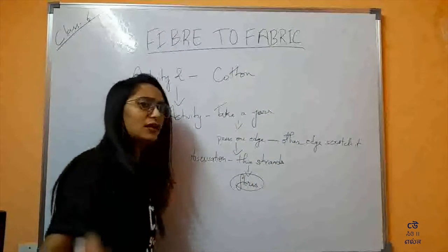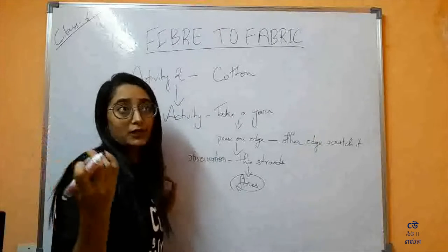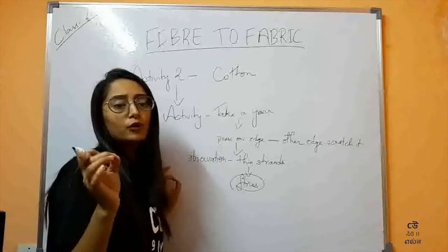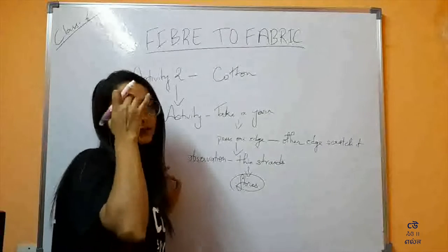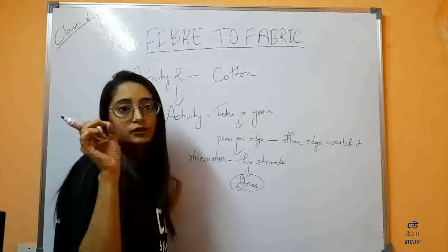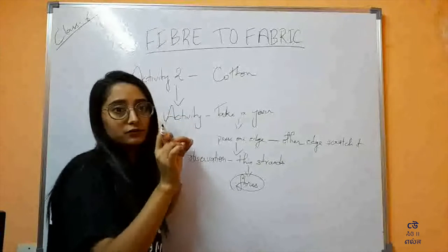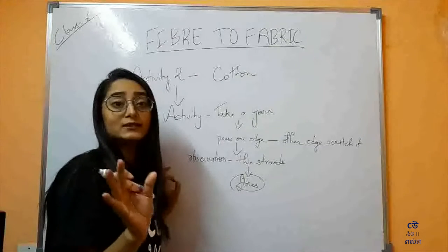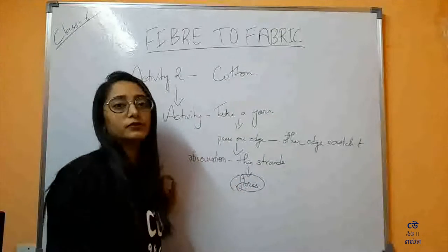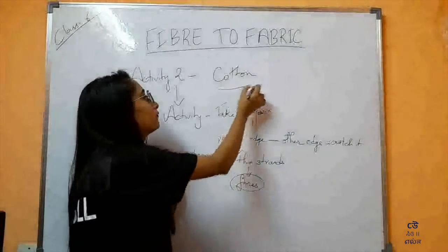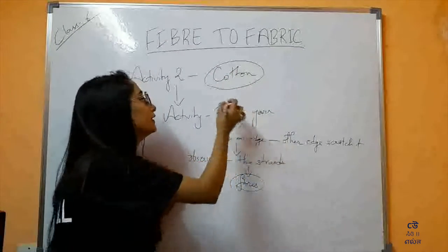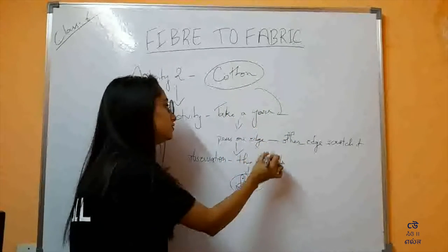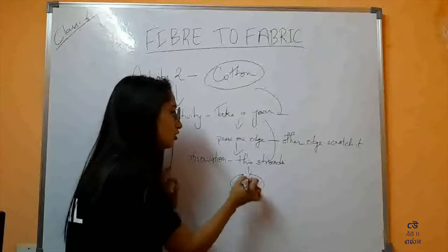As you have seen, while sewing any clothes, it's really difficult sometimes to put the thread through the needle, because you can see several thin strands — those thin strands are nothing but fibers. So now we know: cotton fabric is made up of yarns, and these yarns are again made up of thin strands called fibers.